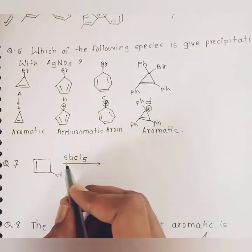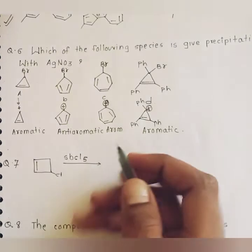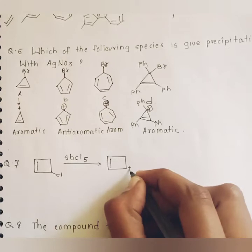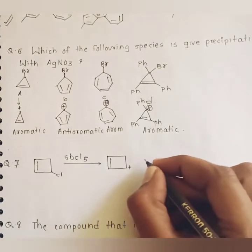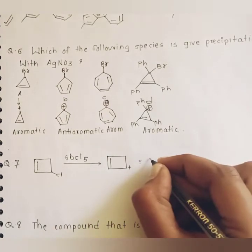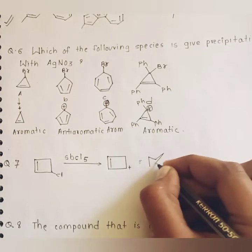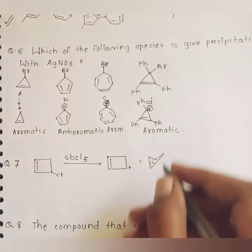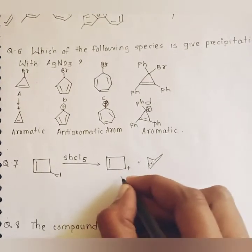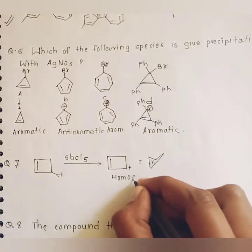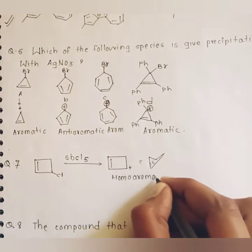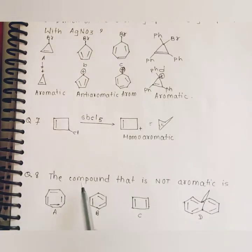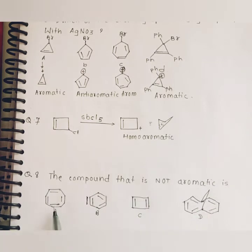Question seven: when this compound is treated with antimony pentachloride, it results in the formation of a cyclobutenyl cation. This cyclobutenyl cation is a homo aromatic analog of the cyclopropenyl cation. Therefore, it results in a homo aromatic compound.